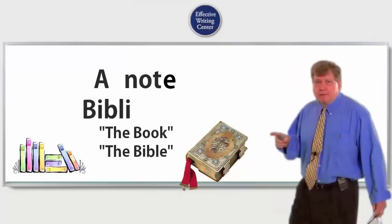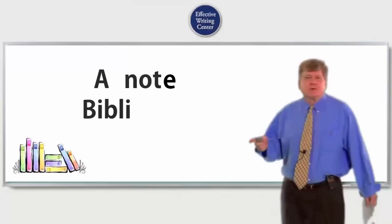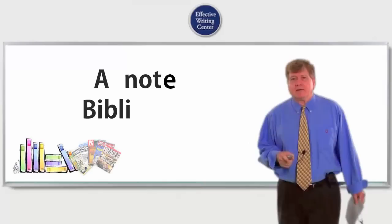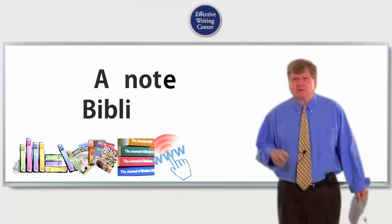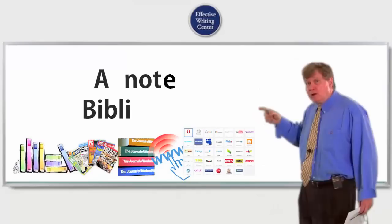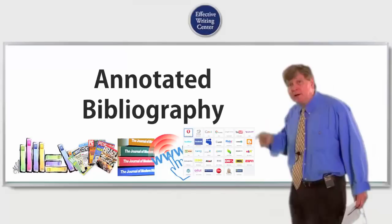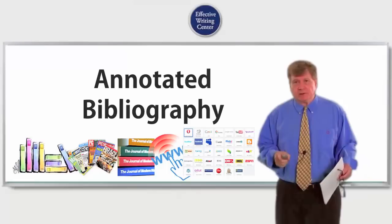So all an annotated bibliography is notes about a book. Now, books come from the days of yesteryear, back in the day. Today, of course, we have magazines online in print, journals online in print, websites, social media, all of which we can make notes about. And whenever we make notes about those things, we're making an annotated bibliography. That's what an annotated bibliography is. It's something simple.